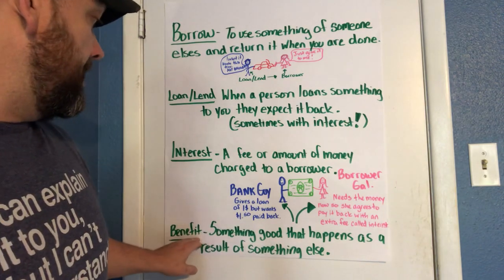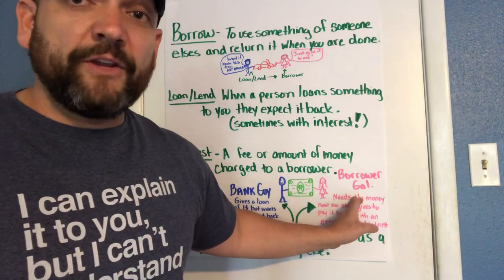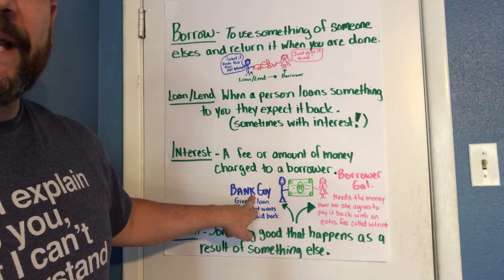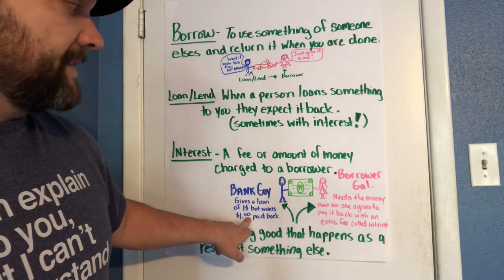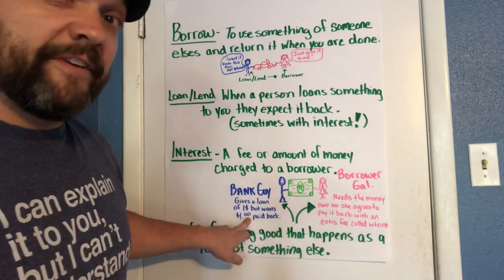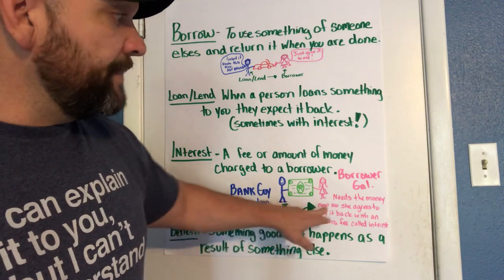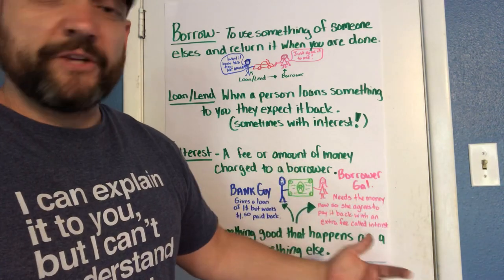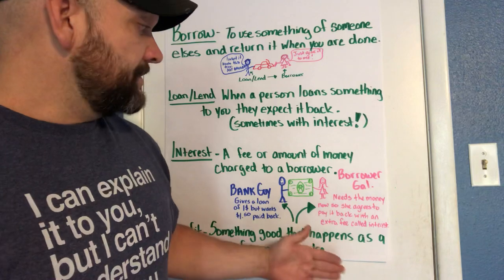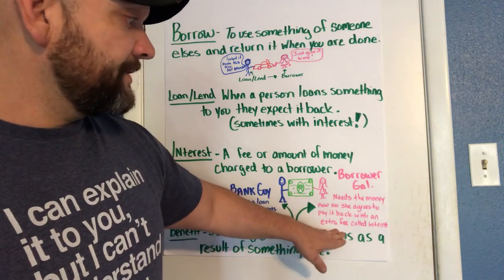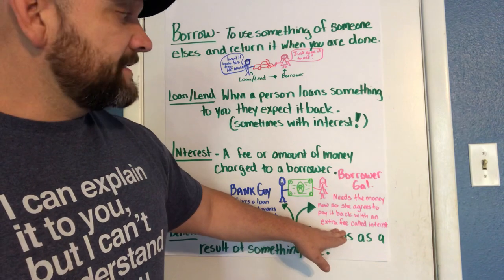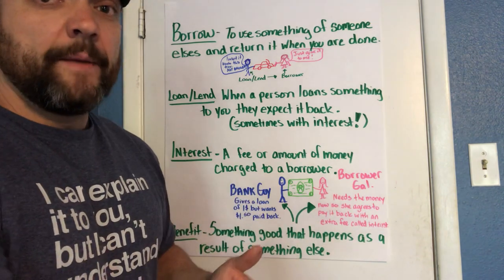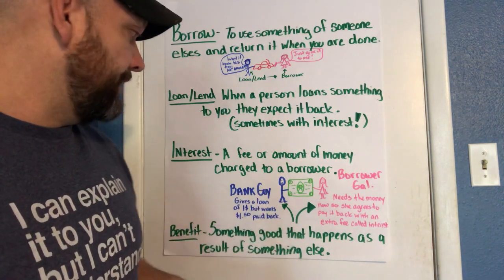The 'benefit' is something that each of them gets out of it. Can you think about what the benefit might be to the bank guy? That's right — he gets that extra fifty cents paid back to him, so he's loaning a dollar but gets a dollar fifty back later. What would be the benefit to borrower girl? She gets the money that she needs right now instead of having to wait for it. So she's willing to pay that extra fifty cents because she needs the money now. They both have a benefit in this situation.